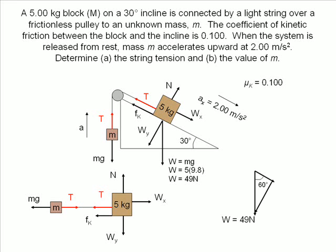We draw a force triangle for the weight. Wx is the weight times the cosine of 60 degrees. Wy is the weight times the sine of 60 degrees.